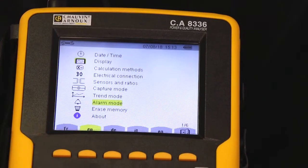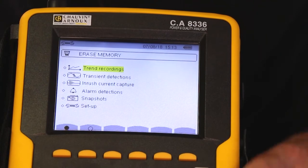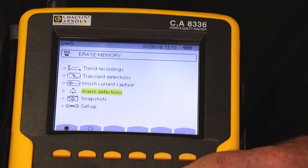The next setup key down enables me to erase the product's memory. I can either erase trend recordings, any transient detections, inrush captures, alarm detections, or any snapshots. Or I can in fact erase the setup and go back to default settings.